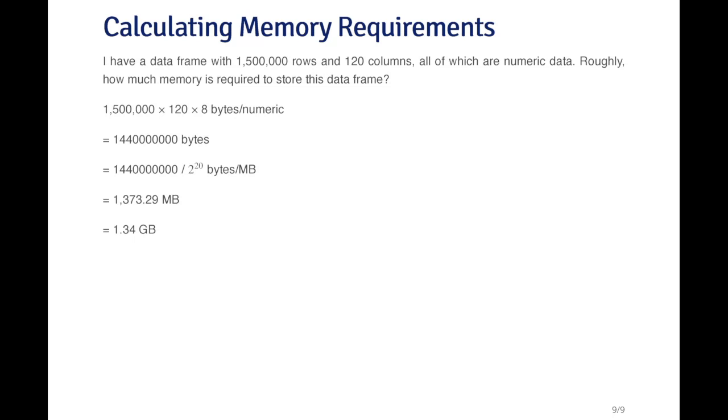So here's the number of bytes. Now there's 2 to the 20 bytes per megabyte. So I can divide the number of bytes by 2 to the 20 and that's how many megabytes I got. So I've got 1,373.29 megabytes. And I can divide that again by 2 to the 10 to get the number of gigabytes. So it's going to be roughly 1.34 gigabytes.